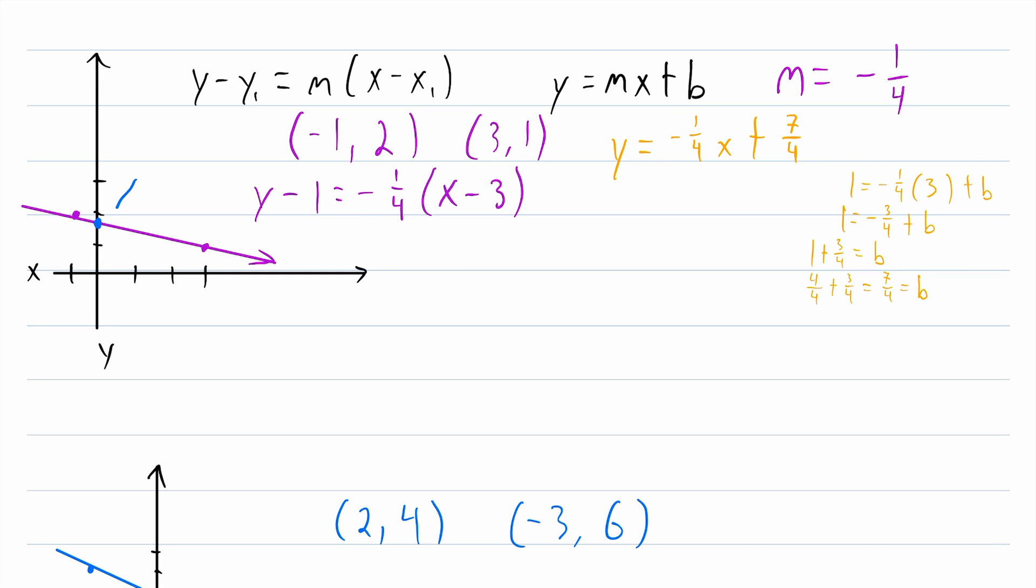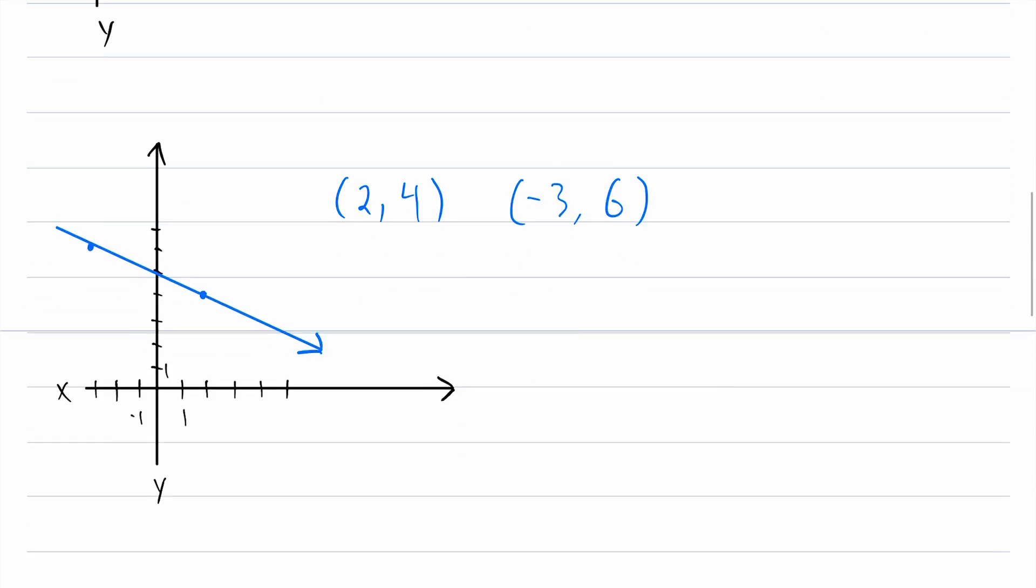We can also see that it appears the y-intercept of the line is not a nice integer value which also agrees with our equations. So those are just a couple things you can do to check your work.